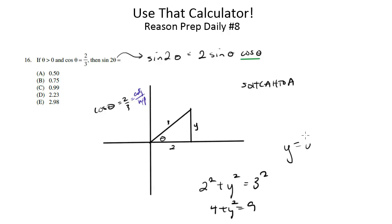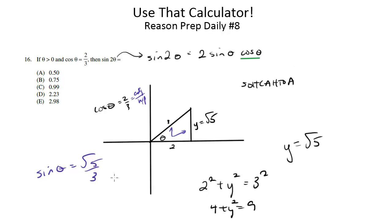So y would equal, when you figure this all out, square root of five. So this is square root of five. Okay, now the sine of theta would be, according to SOHCAHTOA, opposite over hypotenuse.